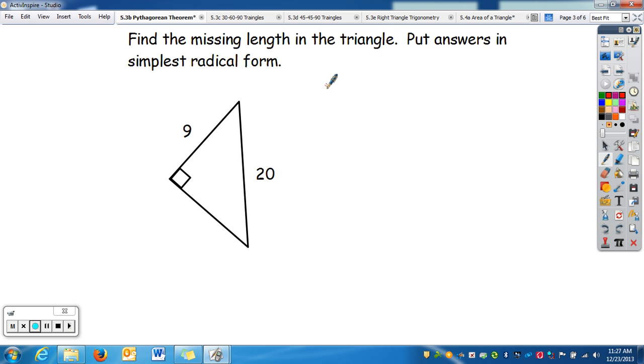Let's practice using the Pythagorean Theorem, so we're going to find the missing links. Notice here we're going to put it in simplest radical form, so we're going to use what we did on our radical video. So to identify each part,